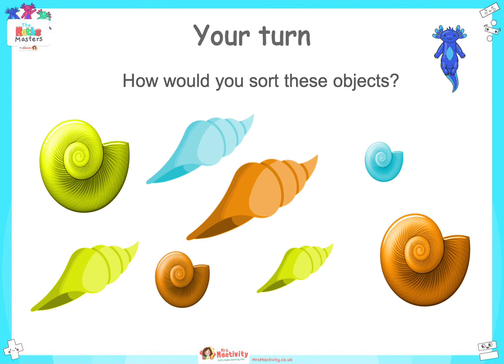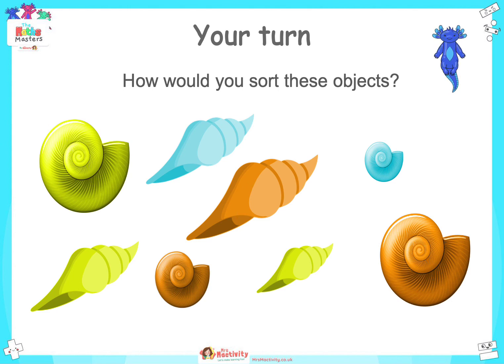There are other ways of sorting these shells, not just the type of shell. Discuss with a partner other ways you could sort them — remember, you can't leave any out. You could sort by colour of shell or by size of shell. If you sorted by colour, you would actually have three groups: green, blue and brown. If you sorted by size, you'd probably have three groups: small, medium and large.